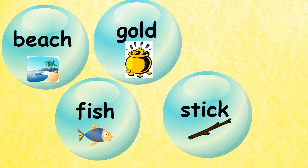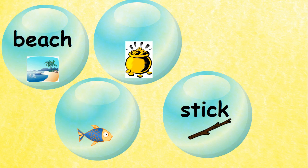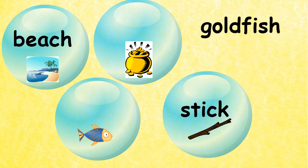We have beach, gold, fish, and stick. Look at the four words: beach, gold, fish, stick. Which of these two words do you think we can put together to make a compound word? We have gold and we have fish. We put them together and we get goldfish. So our compound word is goldfish.